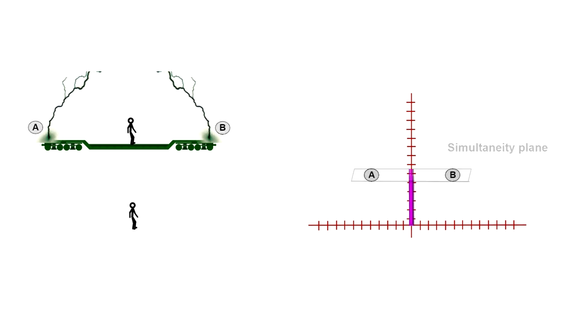The plane containing A and B contains all the points that are simultaneous for the person on the ground at the time of the two strikes. We call this the simultaneity plane.